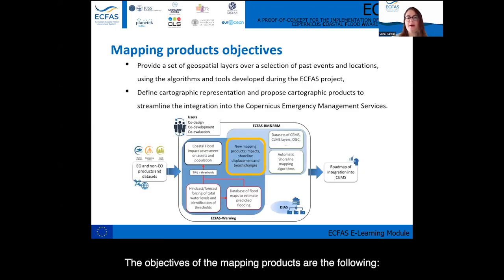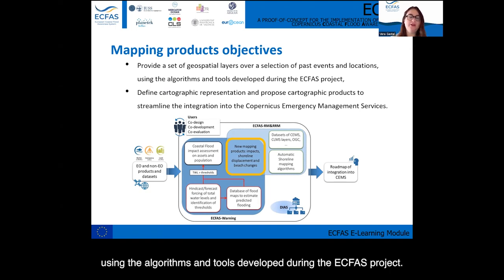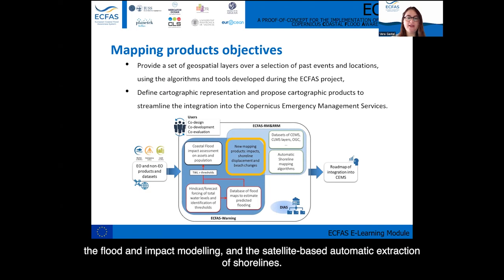The objectives of the mapping products are the following. First, to provide a set of geospatial layers over a selection of past events and locations, using the algorithms and tools developed during the ECFAS project. This includes the total water levels, hindcast and forecast, the triggering thresholds for coastal flooding, the flood and impact modeling, and the satellite-based automatic extraction of shorelines.